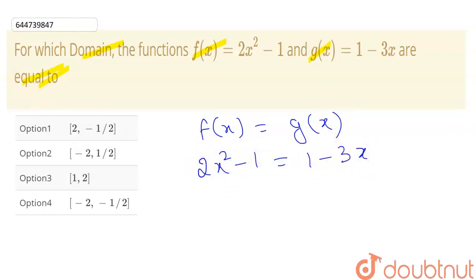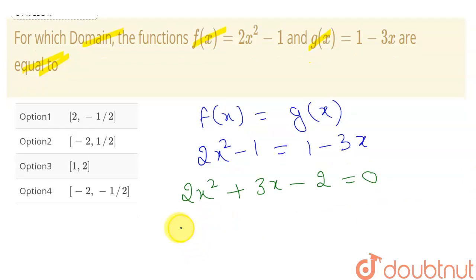So from here I can write that 2x squared, this minus when come here will come plus, so plus 3x minus 1 minus 1 will give me minus 2 equal to 0. So we have to solve this. This is a quadratic equation.